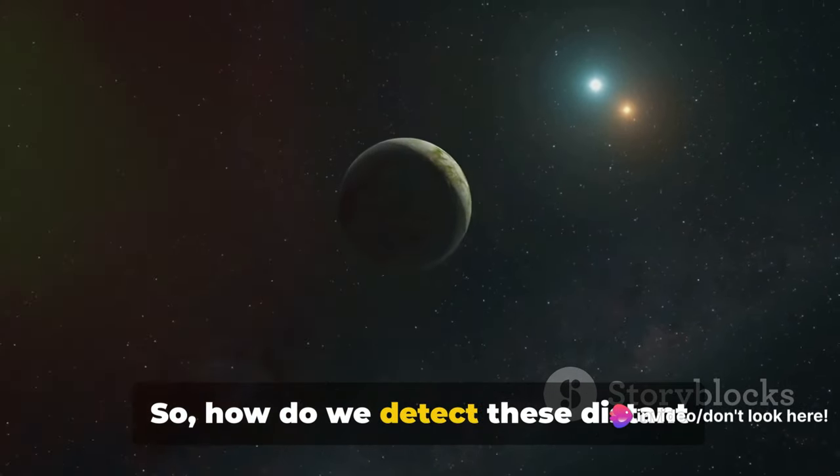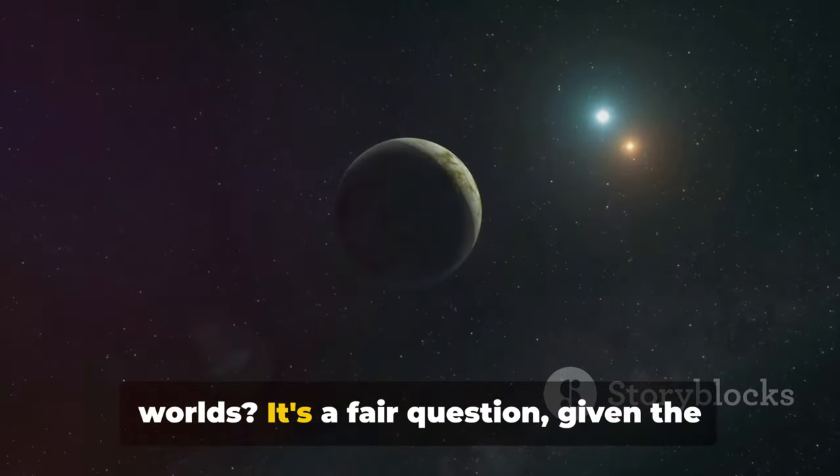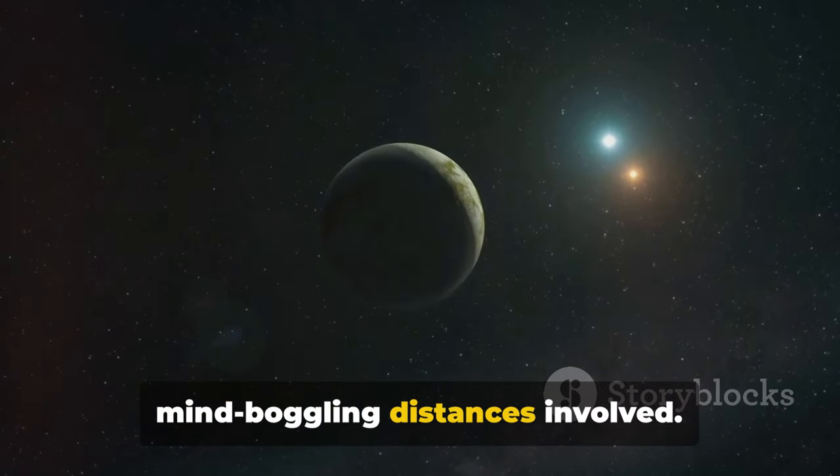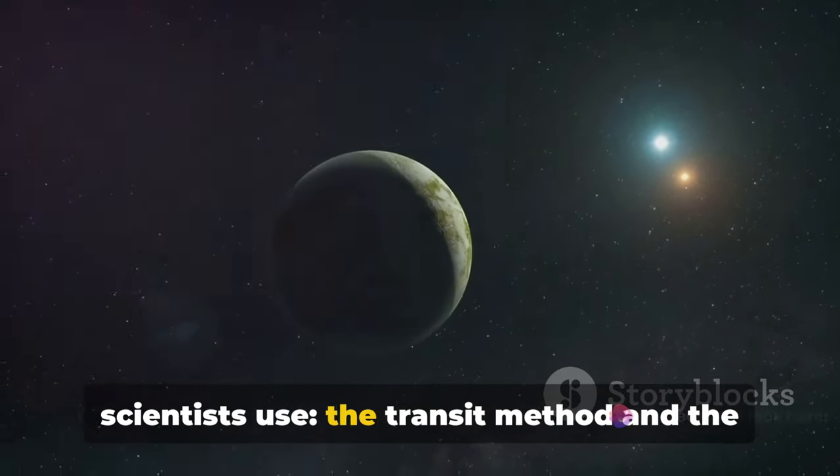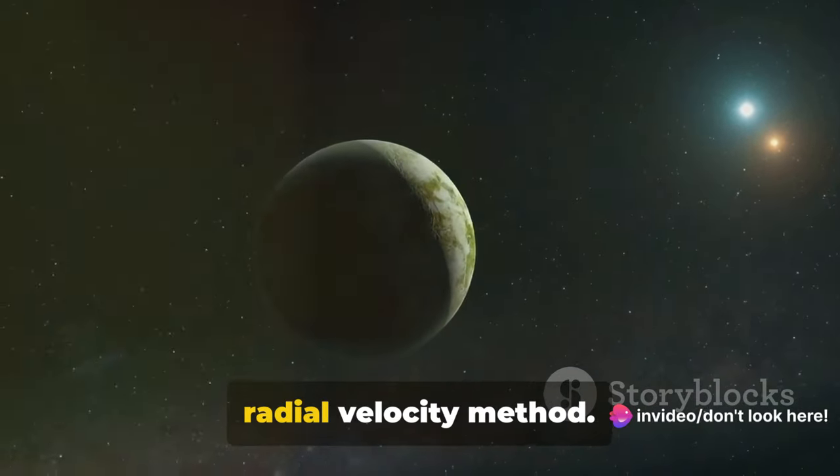So how do we detect these distant worlds? It's a fair question given the mind-boggling distances involved. There are two primary methods that scientists use: the transit method and the radial velocity method.